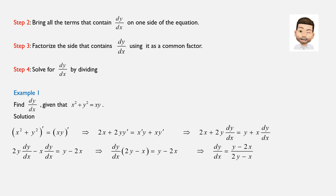Let's see an example. Find dy over dx, given that x squared plus y squared equals xy. It's obvious that this is a case where y is defined implicitly, meaning we cannot perform any operation to isolate y. Hence, in order to find dy over dx, we should apply implicit differentiation.